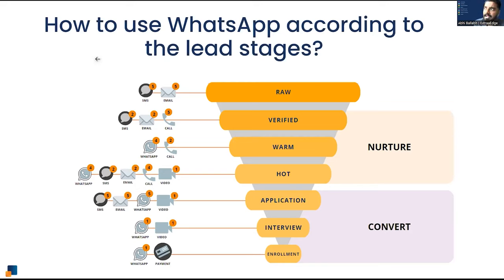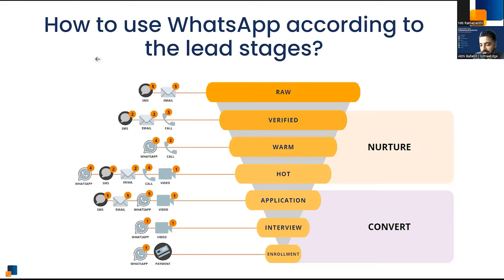WhatsApp needs to be used in conjunction with other modes of communication. Text and email are not dead — a smart marketer uses these in combination for more impact based on funnel stage. WhatsApp is most relevant from the warm stage onwards through enrollment: transactional communication like application deadlines, completing applications, interview slots, enrollment fee payment notifications — it should be the de facto medium alongside emails for those stages.